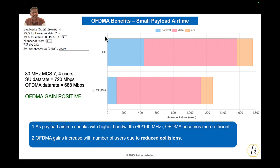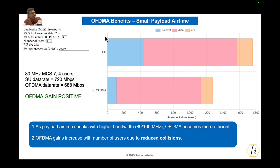Now that we understand OFDMA gains in theory and in what scenarios gains will occur, what is the right metric to capture these gains? Clearly from the calculations, air time — the total air time consumed — looks like one of the good metrics to capture OFDMA gains. I think air time is a better metric than latency. Some previous testing by various companies has used latency instead of air time, but air time is a much more powerful way to showcase the benefits. End-to-end latency depends on many factors including scheduling latency, software CPU cycles, and queuing latency — so showing gains in terms of air time is much simpler and straightforward.